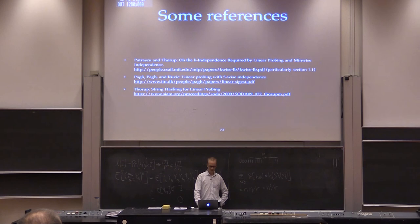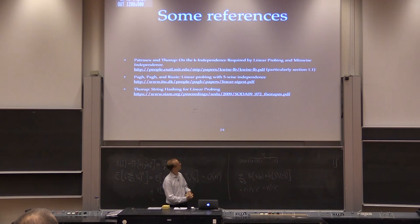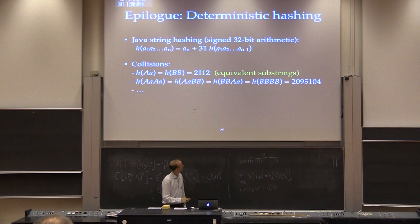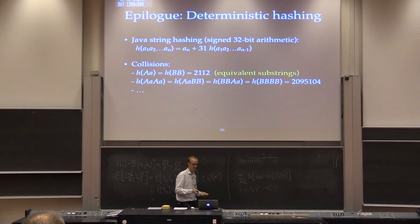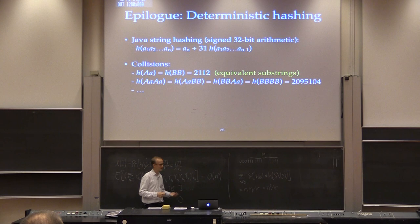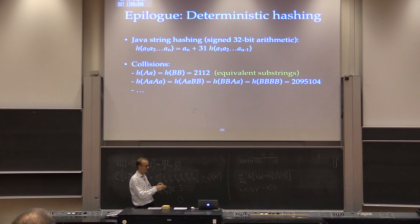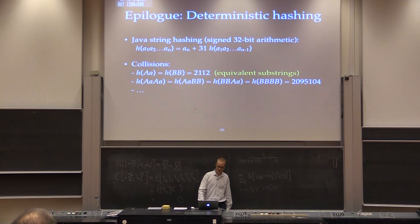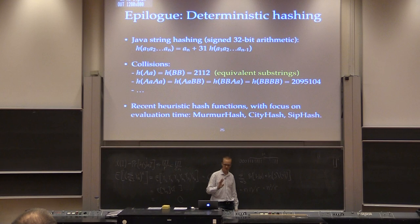Here are a few references if you want to read more. As an epilogue: despite these nice results, in reality people use deterministic hashing. In Java, for example, strings are hashed by multiplying each character by the fixed number 31 and doing things completely deterministically. It's very easy to find things that collide, and you can combine collisions to quickly get lots of things with the same hash value. There are a lot of better heuristic functions — murmur hash, city hash, zip hash — which are certainly better but still not randomized.